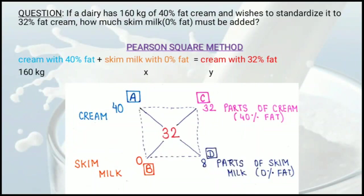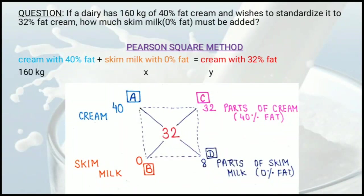We have 4 corners left. On the left side at corners A and B, we write the fat content of the products we have. We have cream with 40% fat and skim milk with 0% fat. So at corner A we write 40, and at corner B we write 0.